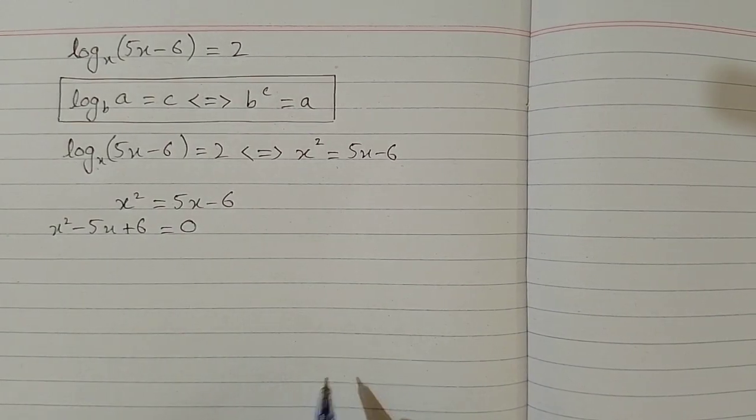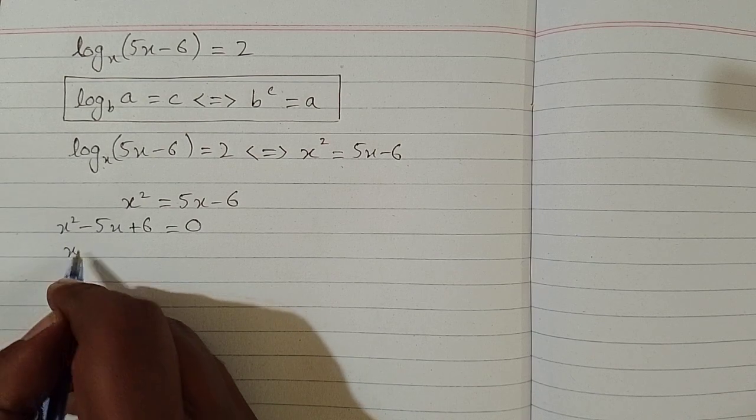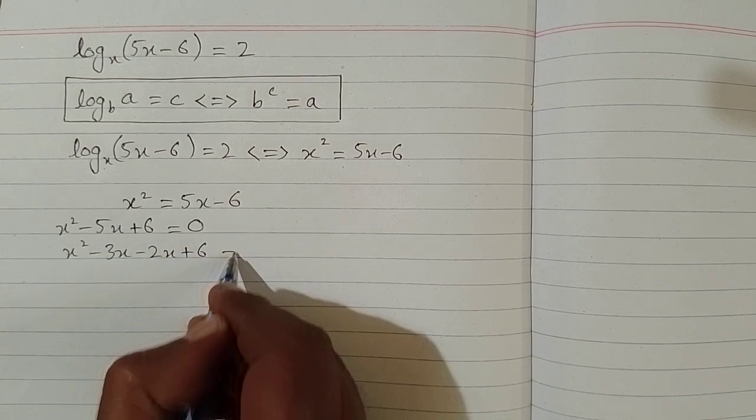And this is a simple quadratic equation which can be solved by middle term breaking. So we have x square minus 3x minus 2x plus 6 is equal to 0.